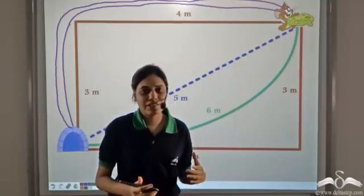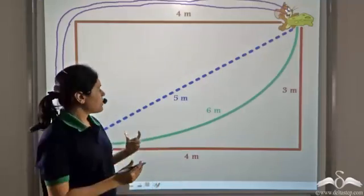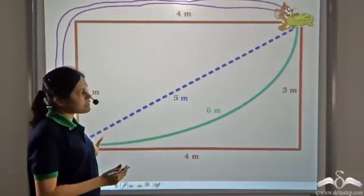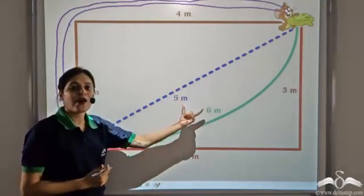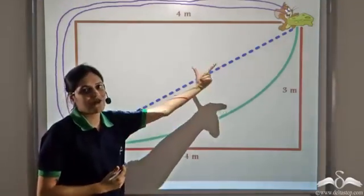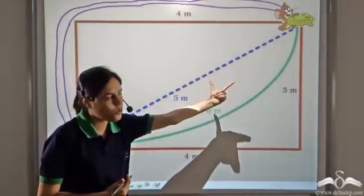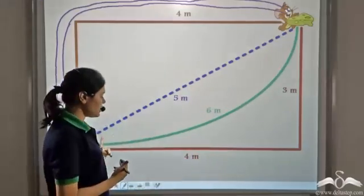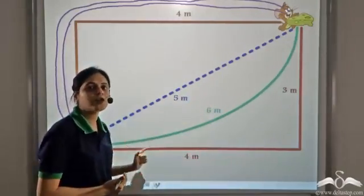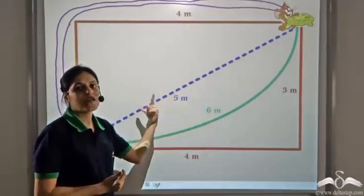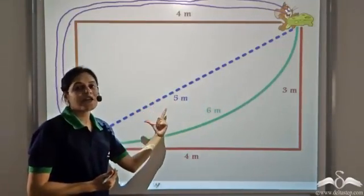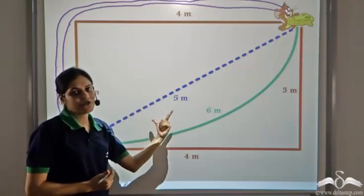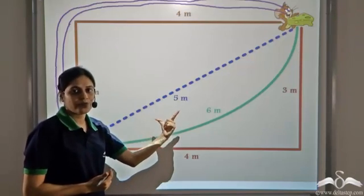For example, in this case, we always say that Jerry is five meters away from his home — whether he has travelled by this path or this path, he will always be five meters away from his home.